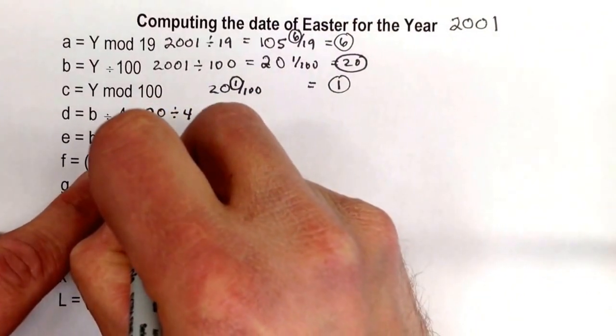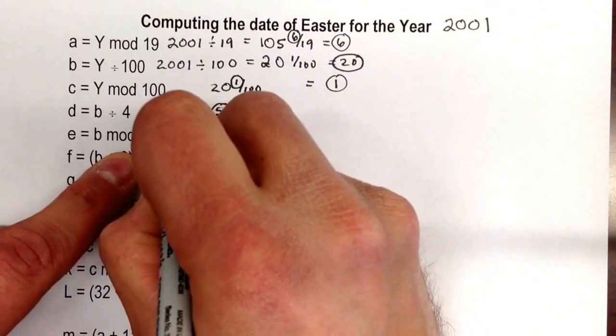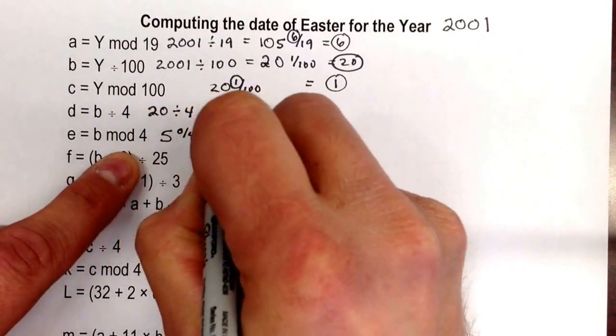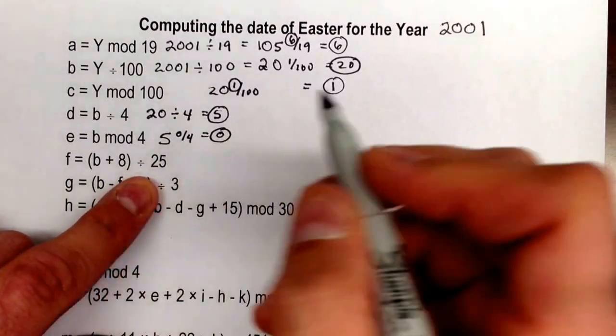But 20 divided by 4 for this one is 5 again, but notice this time there's no remainder. So 0 is what we're looking for. And it's 5, 0, 4, so e is 0.